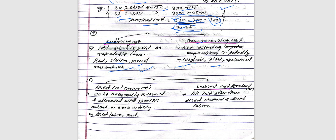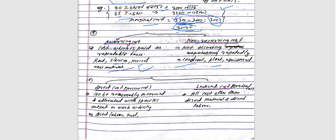Non-recurring cost is a one-time cost. Then we have direct cost and indirect cost. Direct cost can be reasonably and directly measured and traced. Indirect cost cannot be directly measured in the same way.